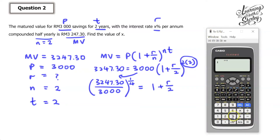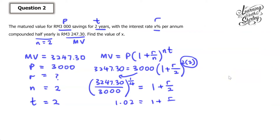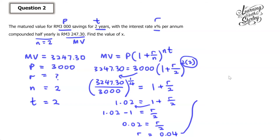Now we take out the calculator: 3,247.3 divided by 3,000, then raise to the power of 1 over 4, and we get 1.02. So 1.02 equals 1 plus R over 2. Shift the 1 over — it becomes minus: 1.02 minus 1 equals R over 2, which gives 0.02 equals R over 2. To find R, shift the 2 over: 0.02 times 2 equals 0.04. Since they want x, and 0.04 means 4 over 100, that is 4%. So x equals 4.